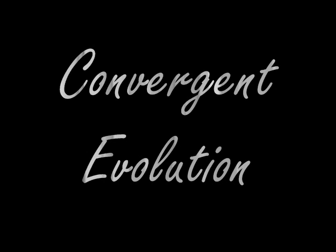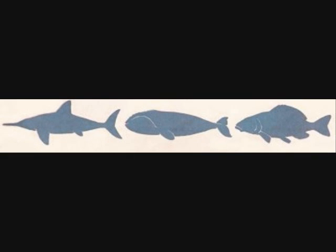These two species adapted a similar trait over time to adapt to a similar environment, in this case a freezing environment. Another, more brief example would be the body shapes of whales, many fish, and the ichthyosaur. Though all these organisms have, or in the ichthyosaur's case had, a very different ancestry, they all adapted to their environment in the form of hydrodynamic, torpedo-like bodies.